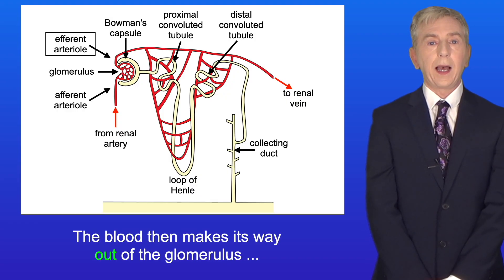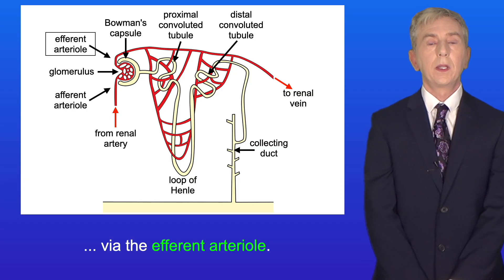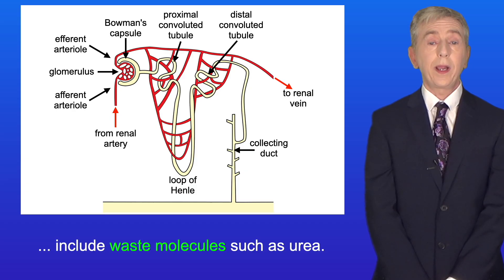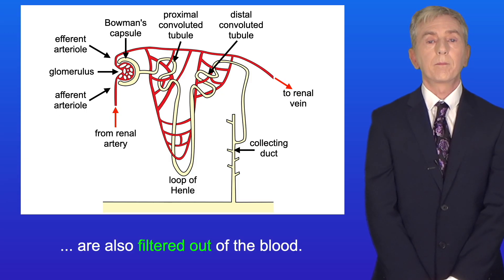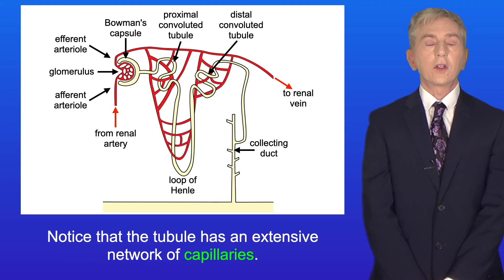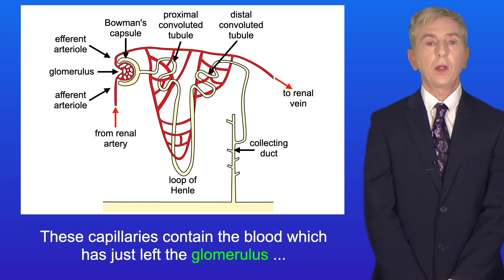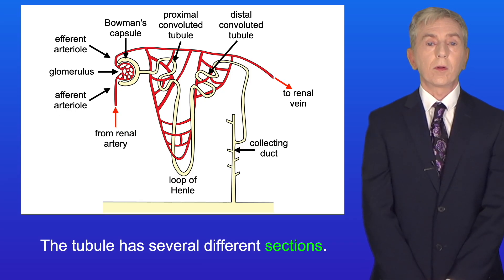The blood then makes its way out of the glomerulus via the efferent arteriole. The chemicals filtered out of the blood include waste molecules such as urea; however, some useful molecules such as glucose are also filtered out. The fluid that has left the blood now makes its way down a long tubule. Notice that the tubule has an extensive network of capillaries, which contain the blood that has just left the glomerulus via the efferent arteriole. The tubule has several different sections.